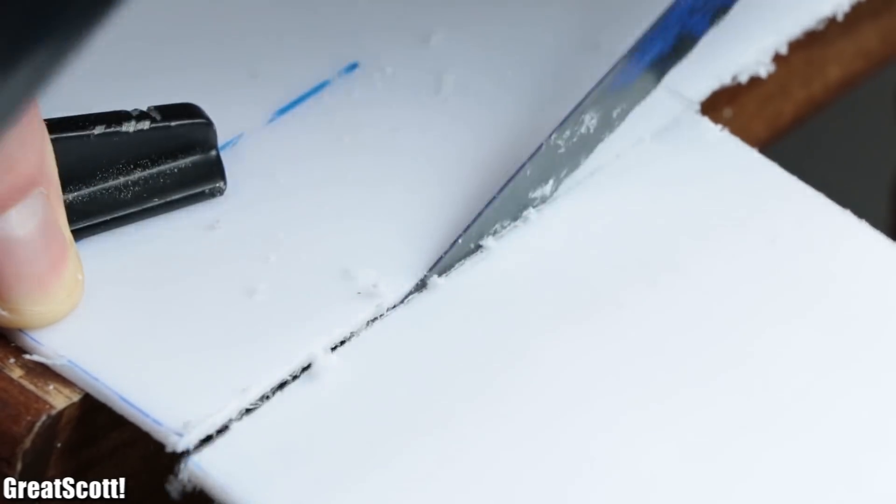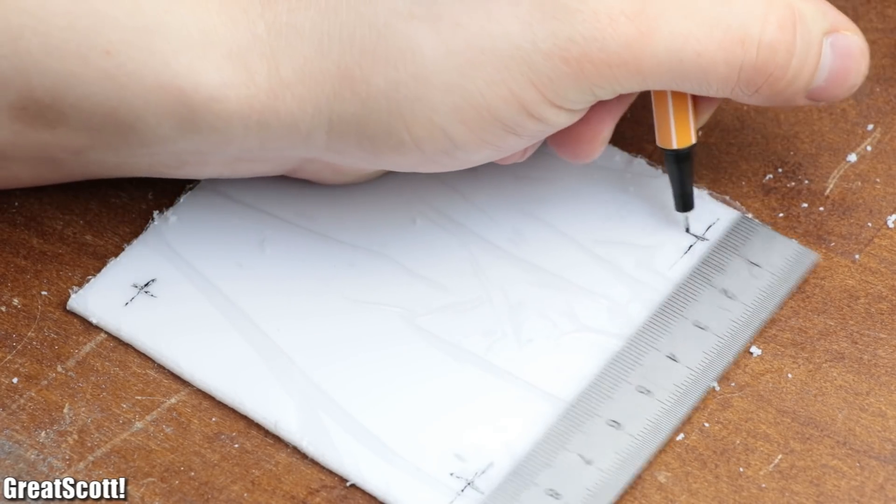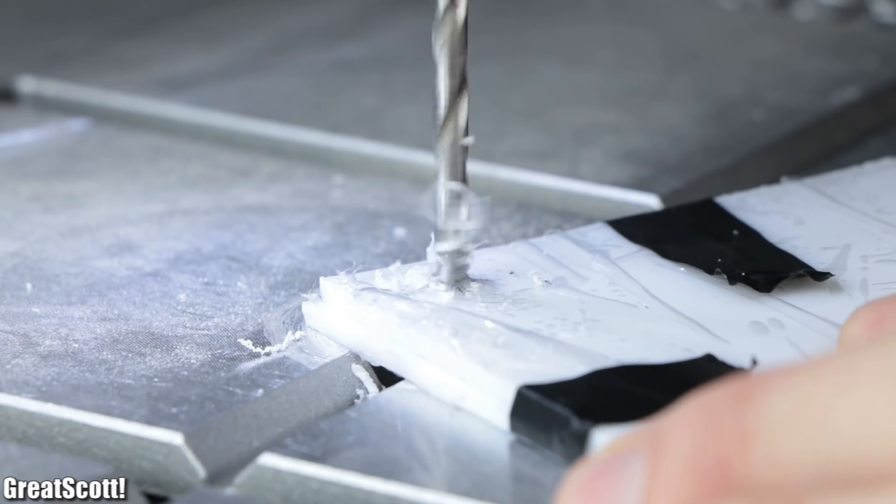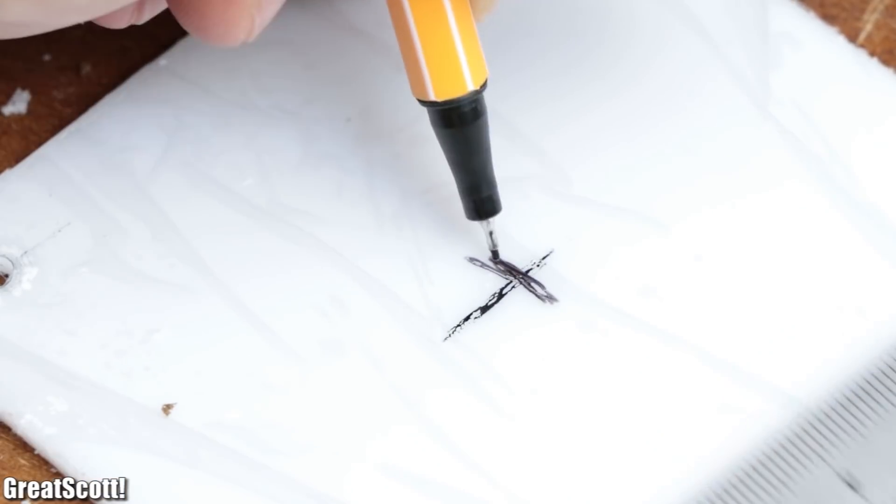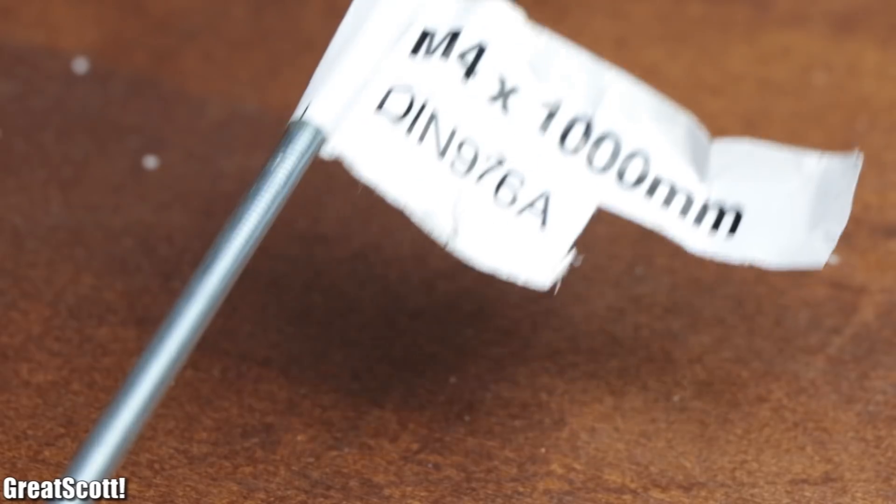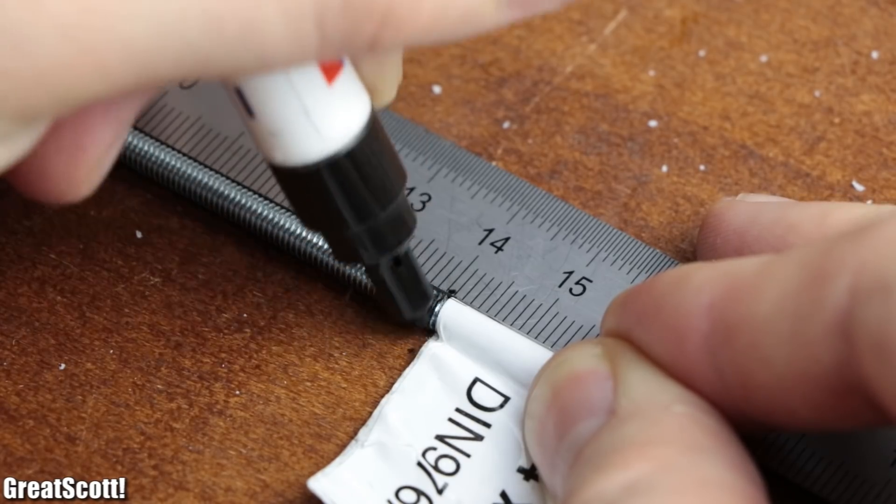Once that was done, I marked one centimeter from the edges in each corner of one acrylic piece a point and used this piece as a template to create four millimeter holes in the corners of the two acrylic pieces. The last four millimeter hole I had to create was in the middle of the upper acrylic piece. Next I got myself an M4 threaded rod and marked four pieces onto it with a length of 14 centimeters.